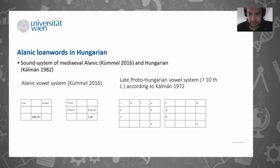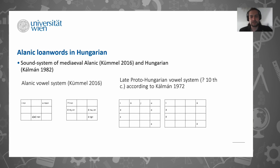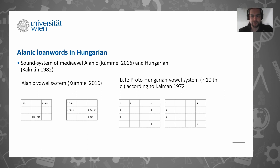Here is just a comparison of the sound systems: a reconstructed sound system for late proto-Hungarian and the sound system of Alanik. This is the sound system of Alanik as known from later medieval documents - there is some written attestation, not much, but some kind of literary tradition. This is from a time slightly later than when these contacts occurred, but we can assume that the vowel system of prehistoric Alanik was probably quite similar to this. This is the vowel system, not the complete sound systems of these languages.